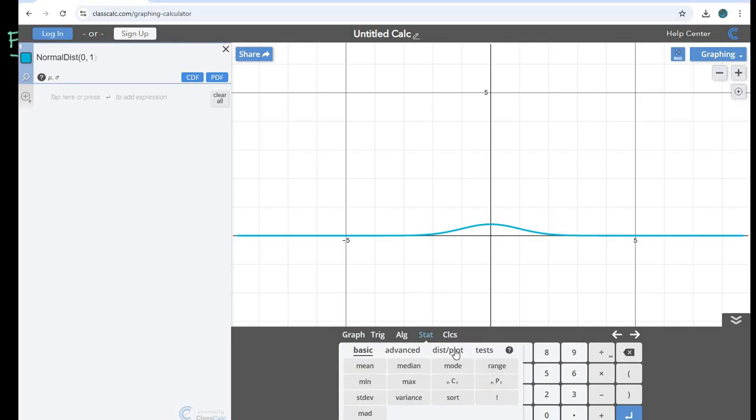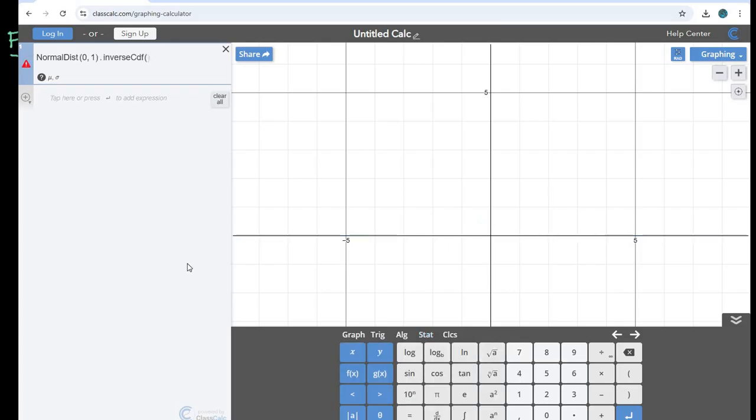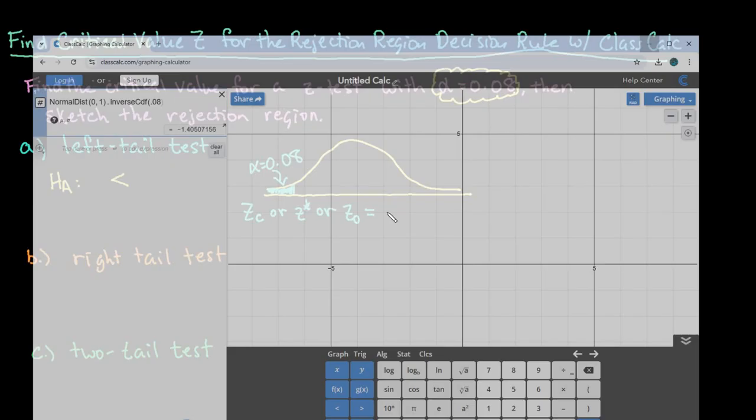And then what we are going to do is we want the inverse of that because we are looking for the z score and not the area. So this time we're given the area and we're trying to find the z score. So what I would do is I would just plug in my alpha level, and this is the critical value. So negative 1.405.